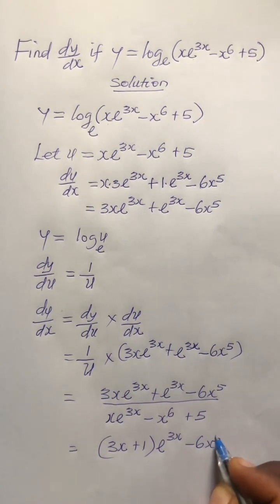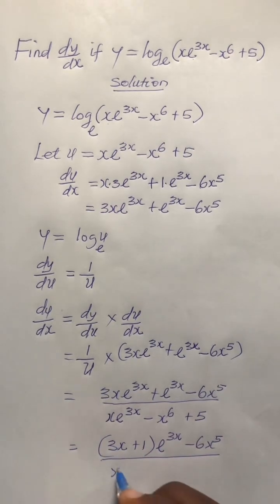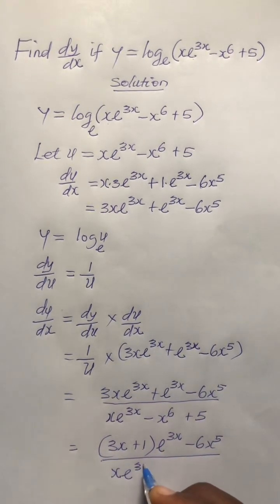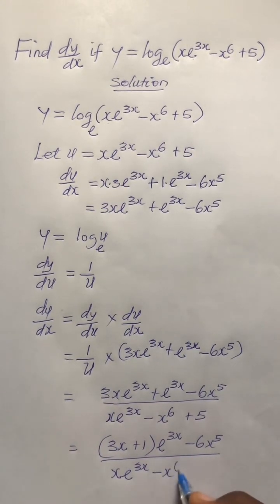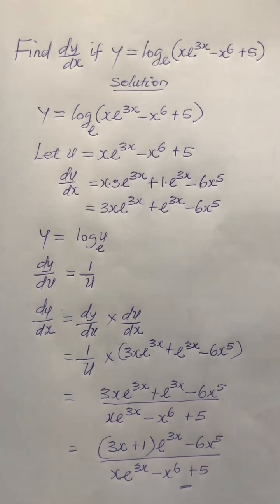So the final answer is (3x + 1)·e^(3x) minus 6x^5, all over x·e^(3x) minus x^6 plus 5. And that becomes the answer.